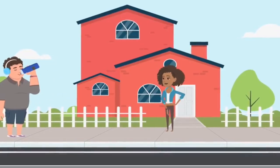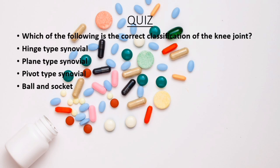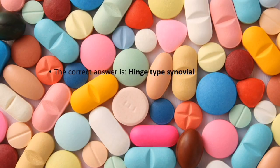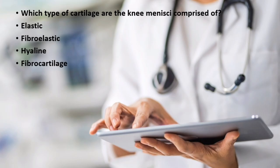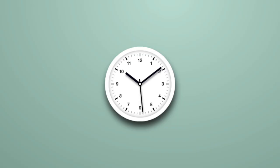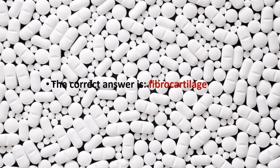Quiz. Question 1: Which of the following is the correct classification of the knee joint? Hinge-type synovial, plane-type synovial, pivot-type synovial, or ball and socket? The correct answer is hinge-type synovial. Question 2: Which type of cartilage are the knee menisci comprised of? Elastic, fibroelastic, hyaline, or fibrocartilage? The correct answer is fibrocartilage.